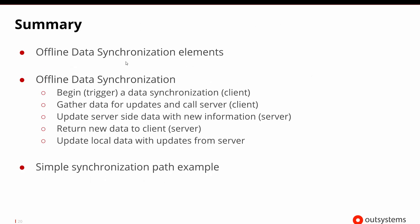In this session, we talked about the offline data synchronization elements, specifically the actions that are available, because those actions are necessary for us to trigger the data synchronization and use the client action to call the server action that eventually returns the updated and synchronized data. We walked through a shell of a simple example to figure out how some of those pieces would work. At this point it may feel a bit nebulous, but we're going to see a real example in the exercises.